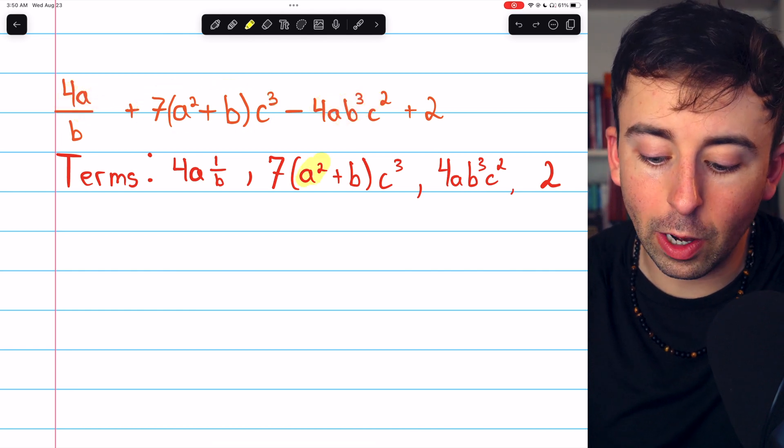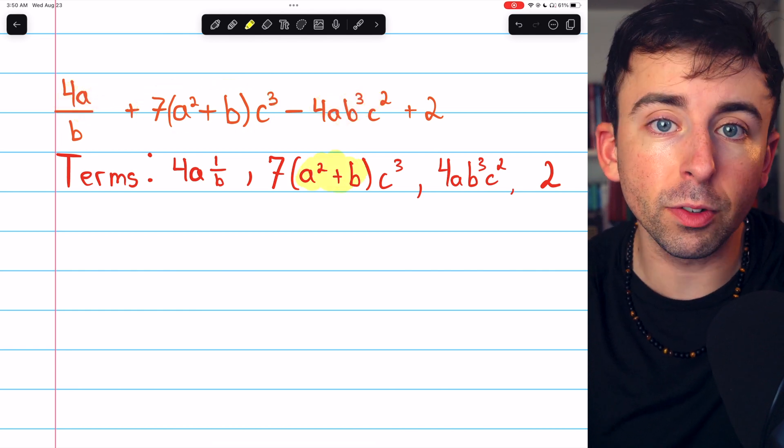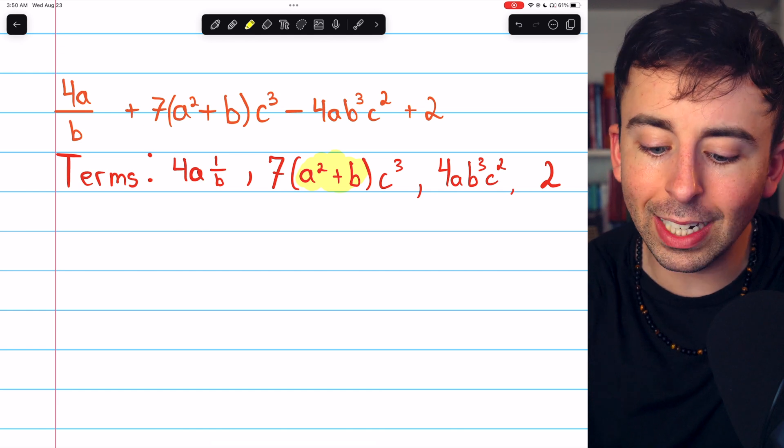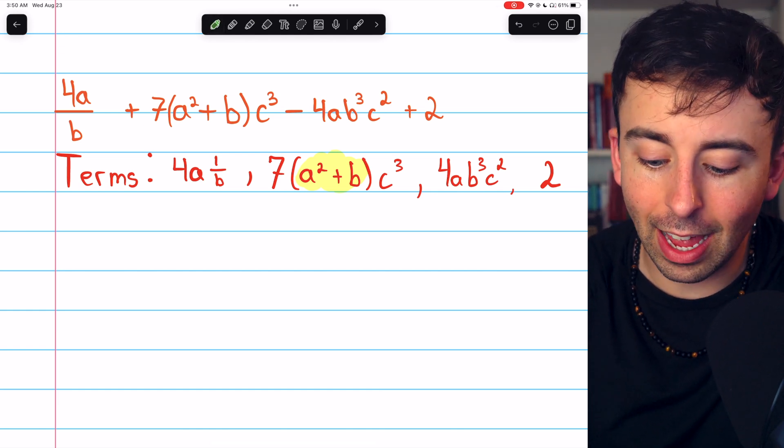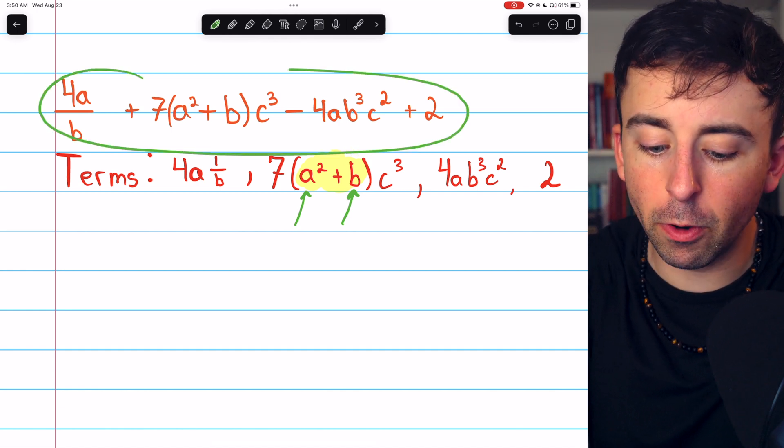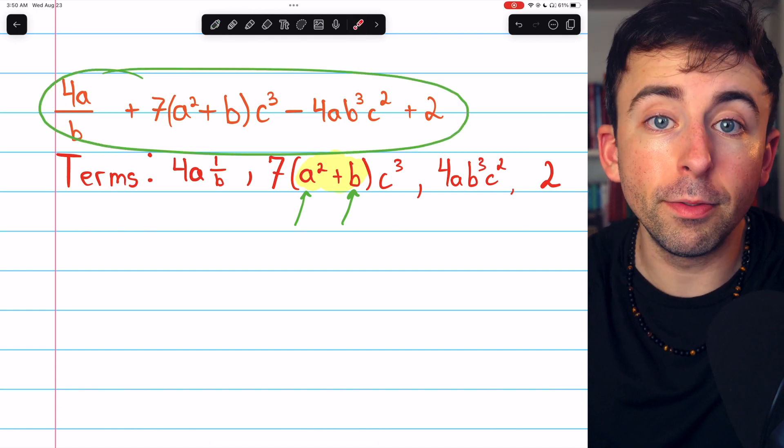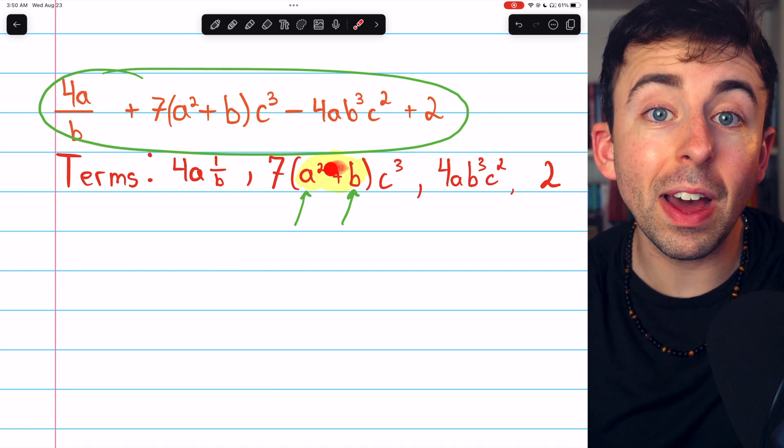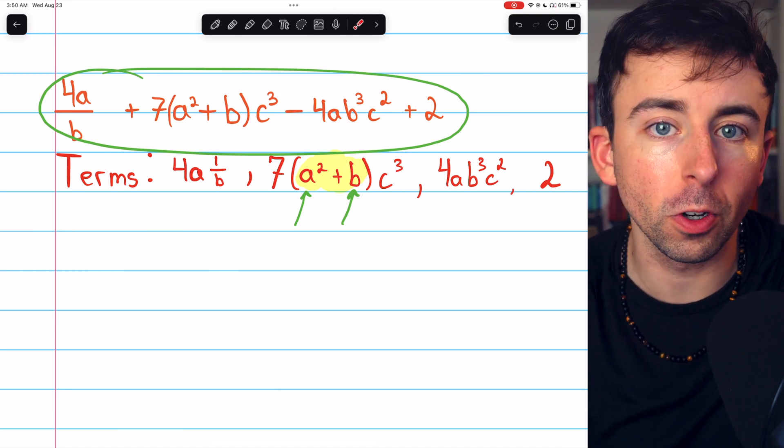We could look at a squared plus b as its own expression. And if we sort of zoom in like that, then indeed it does have two terms, a squared and b. But in the context of this bigger expression, a squared plus b is just one factor of this larger term.